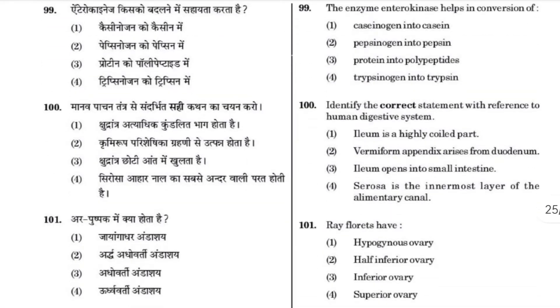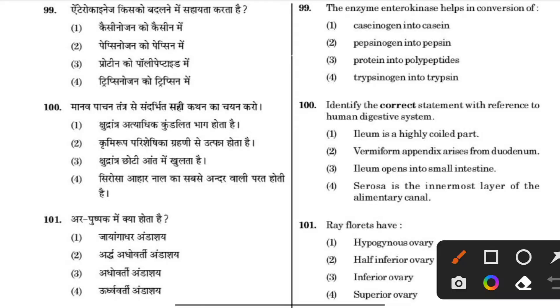Identify the correct statement with reference to the human digestive system. The answer is 1: the ileum is the highly coiled part of the small intestine.